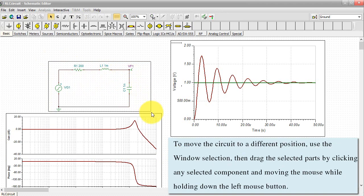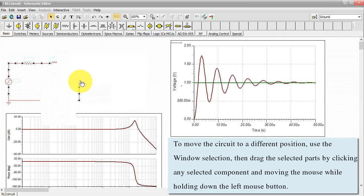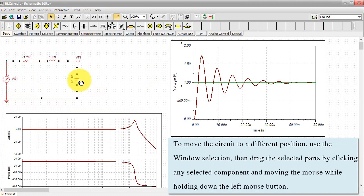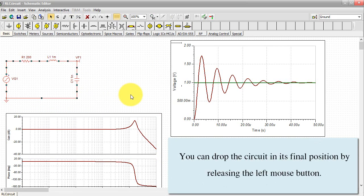To move the circuit to a different position, use the window selection, then drag the selected parts by clicking any selected component and moving the mouse while holding down the left mouse button. You can drop the circuit in its final position by releasing the left mouse button.